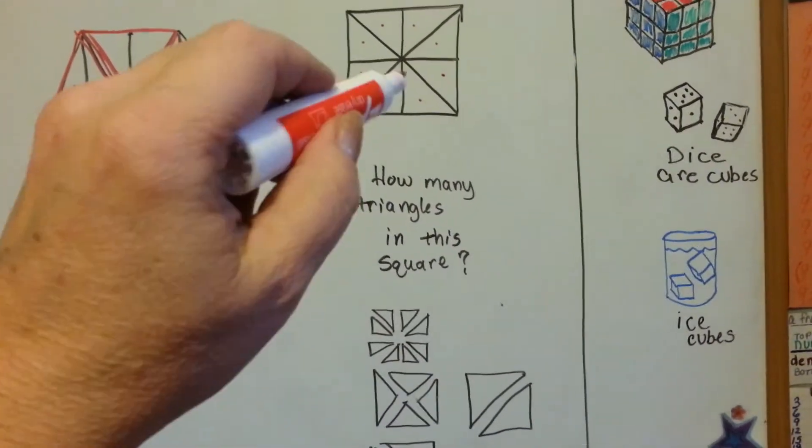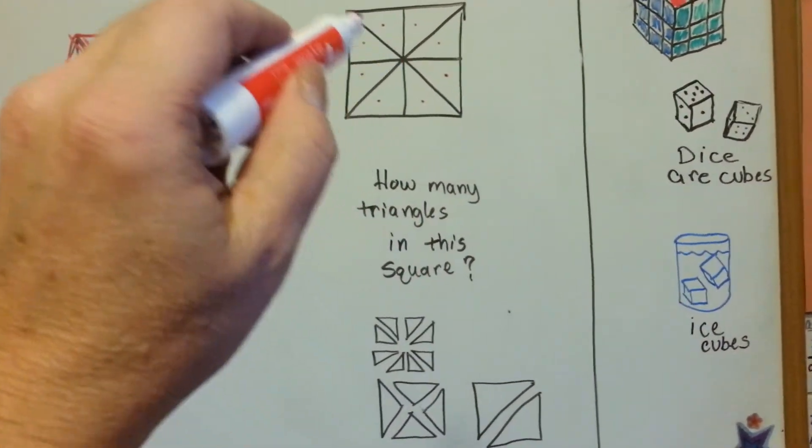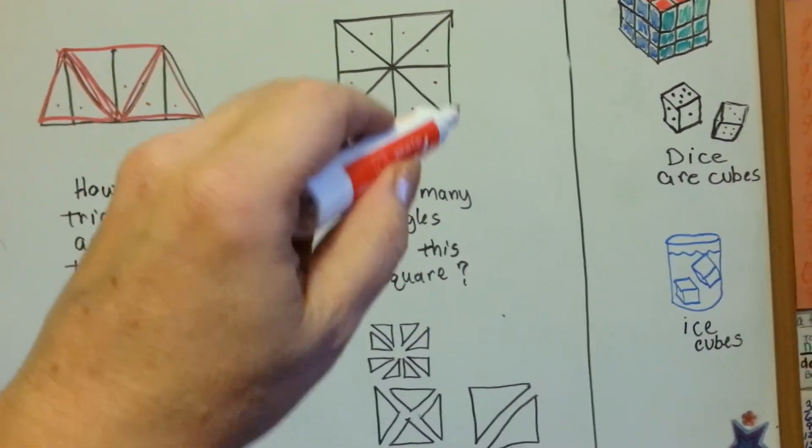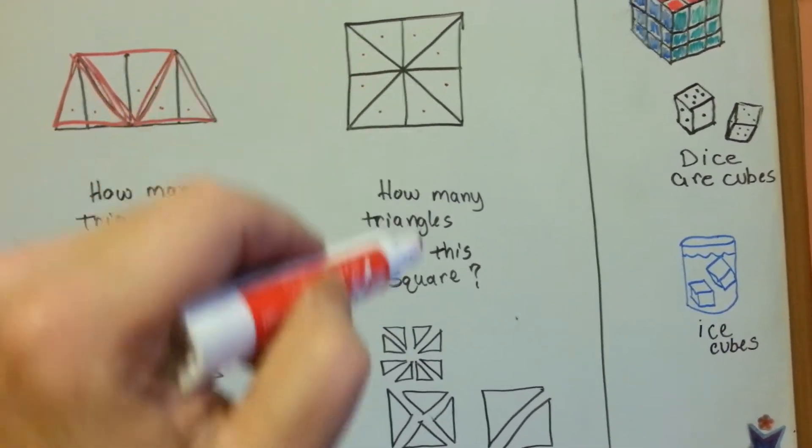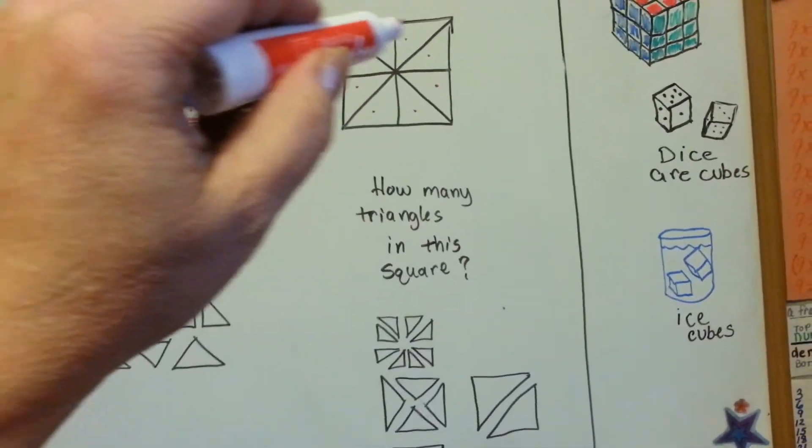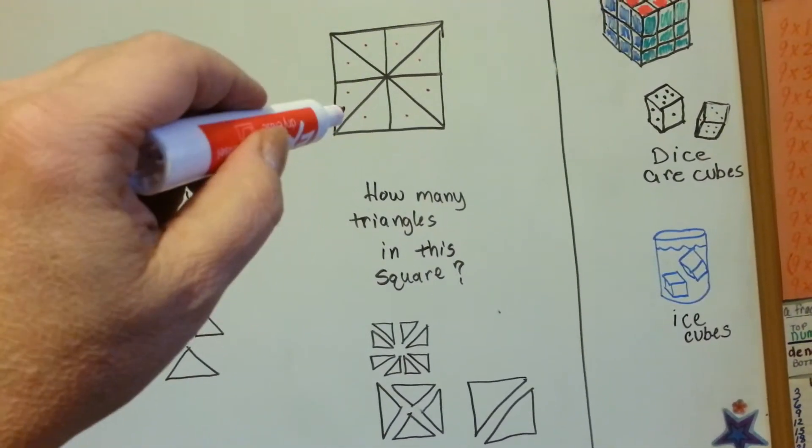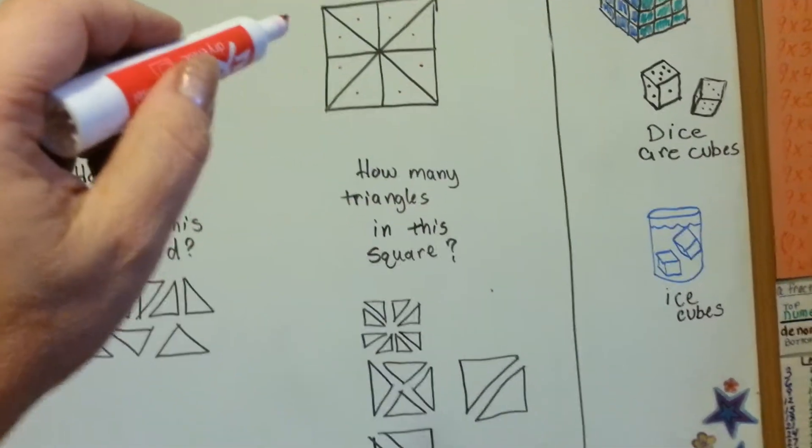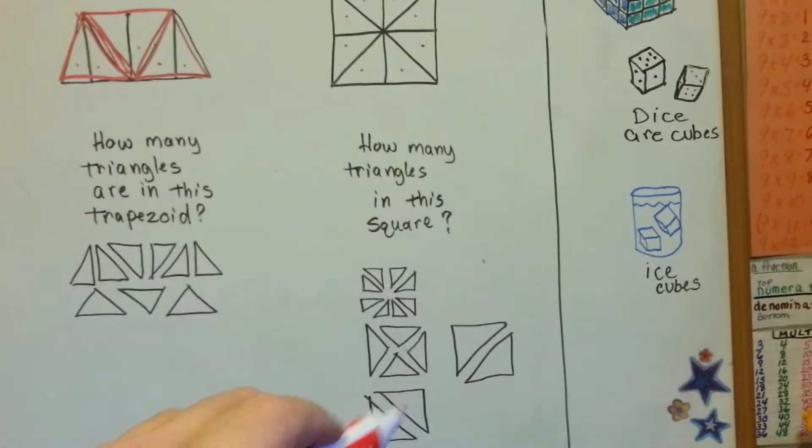Then there's bigger ones, nine, ten, eleven, twelve. And those each take up two triangles to make the big triangle. And then thirteen in this corner, fourteen if we do this corner, and we can do the opposite corners.